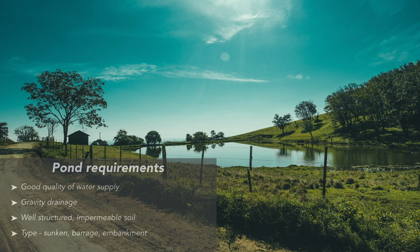Pond is one of the basic culture systems in aquaculture, and it is the oldest system too. It may be a simple hole in the ground called a sunken pond, or an enclosed waterway with one or two walls called a berm pond. Another type is the embankment type, where the pond is built above the ground.